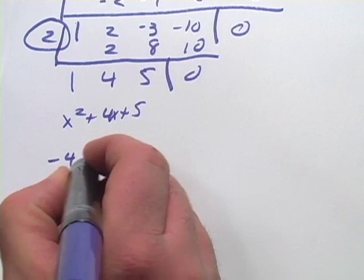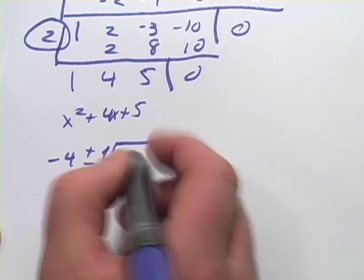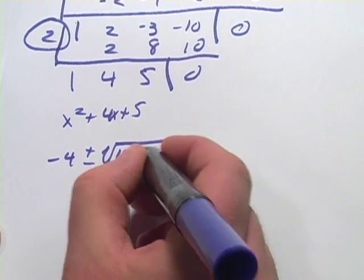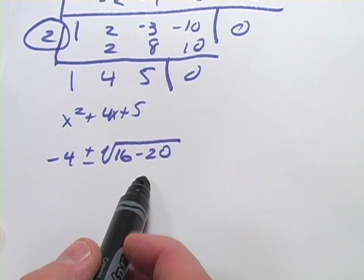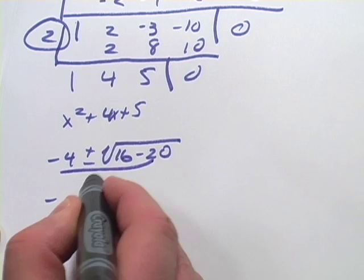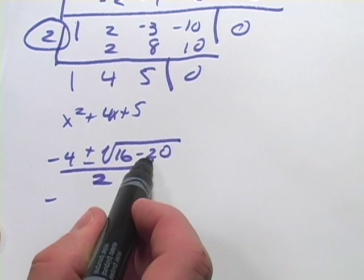So negative b plus or minus the square root of b squared minus 4ac. So it looks like under the radical sign we're going to have a negative 4, over 2a.